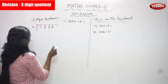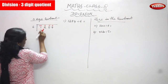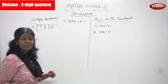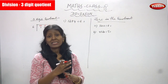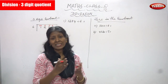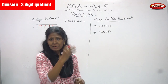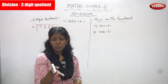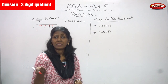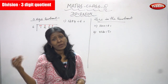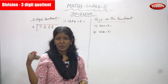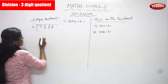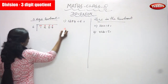First we have to start with the thousands place, after that hundreds, then tens, and ones. We have seen the regrouping method. First we divide the thousands, then hundreds, then tens, and last we divide ones. Here we just do the normal division, but first we start with the thousands.